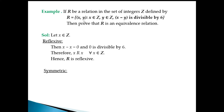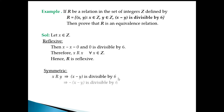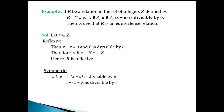For symmetric, we must show that if x is related to y, then y is related to x. When x is related to y, the property x minus y is divisible by 6 holds. Since if a number is divisible by 6, its negative is also divisible by 6 — divisibility is not affected by negation.